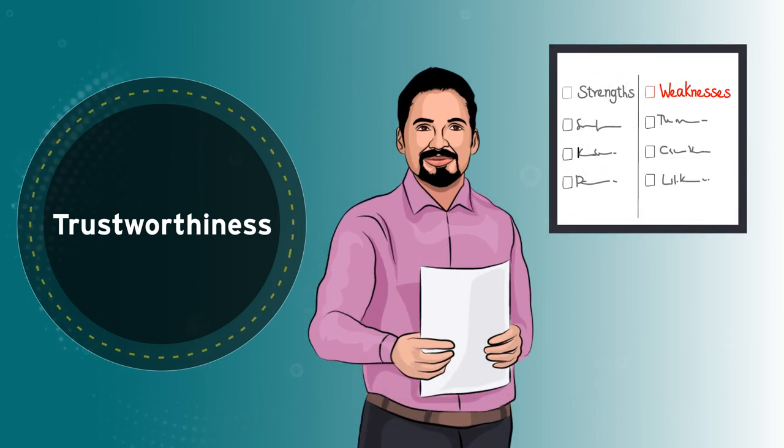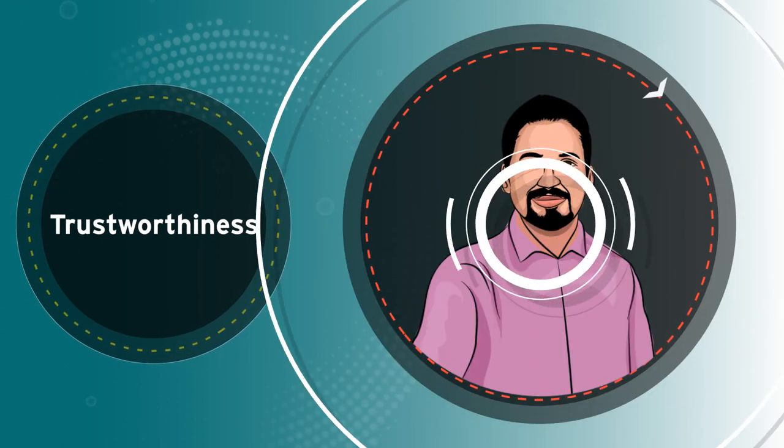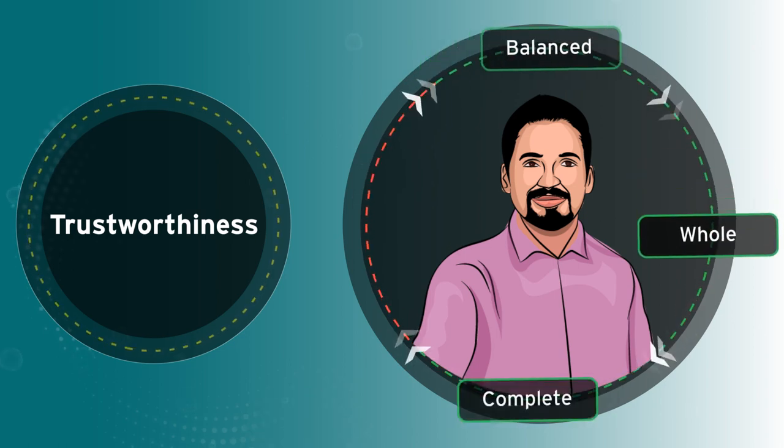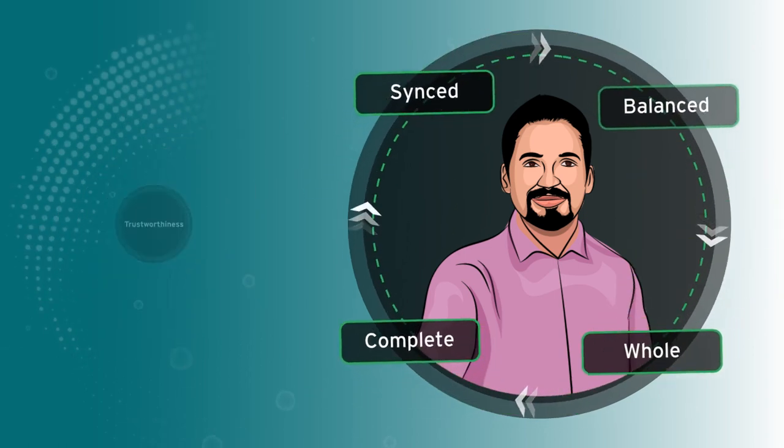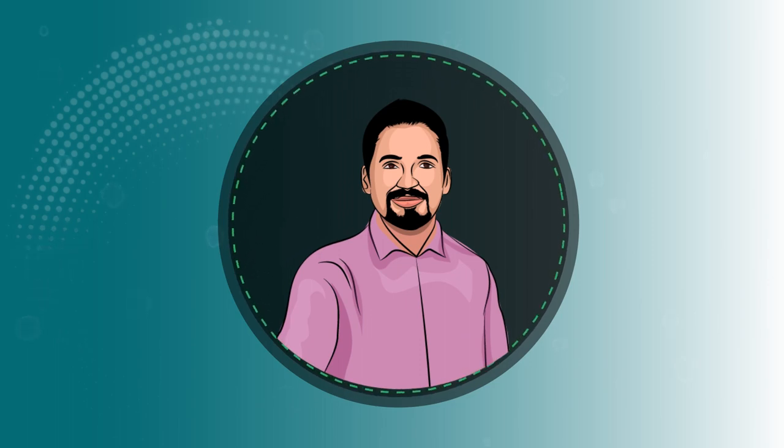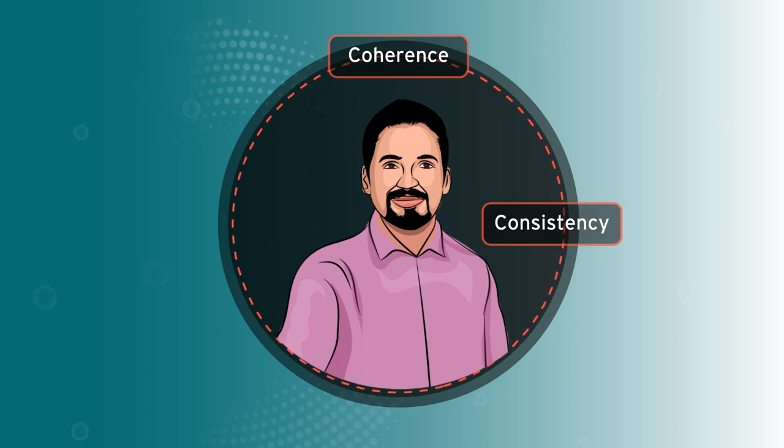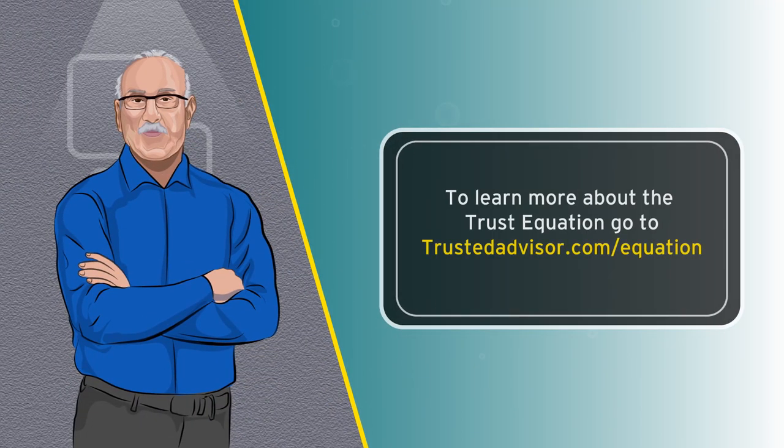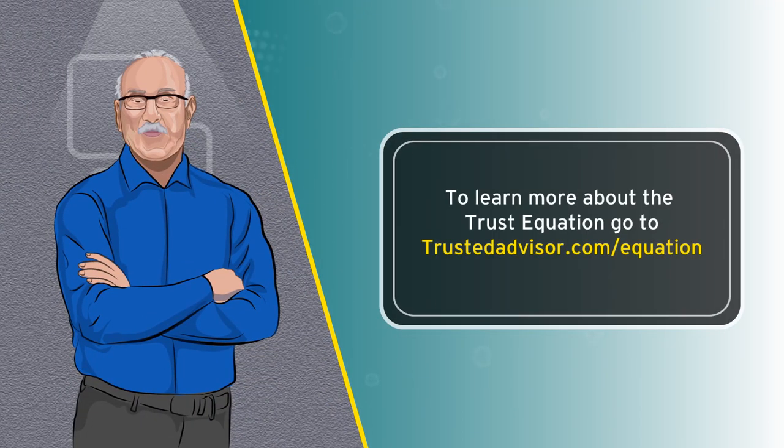When it comes to trustworthiness, you will get more benefit from addressing your weaknesses than from increasing your strengths. The reason is because we perceive that someone who is consistent across all four components is balanced, whole, complete, and in sync. By contrast, someone who is imbalanced across the four components is perceived as lacking in coherence, consistency, and balance, at odds with what we want in someone to trust. So, have the courage to face up to your biggest trust challenges. It will serve you well.